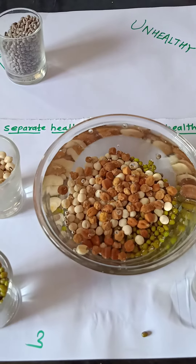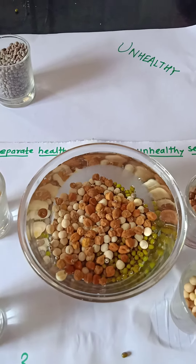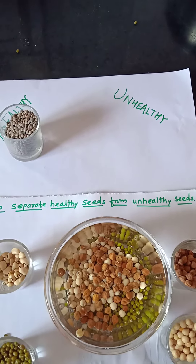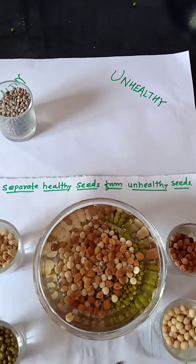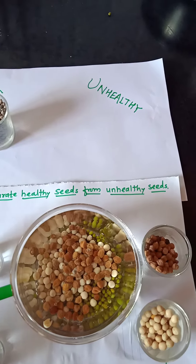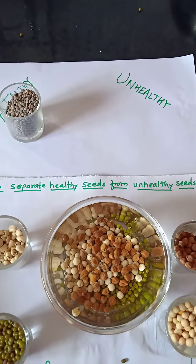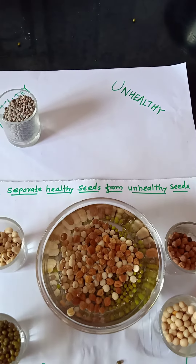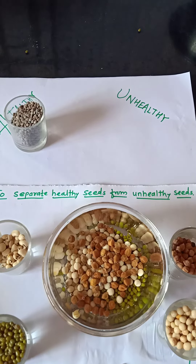All the seeds in the fifth batch are going down. From this experiment, what we can find out is that those seeds which are healthier settle down, and those which are unhealthy will float. With this we can find out which are good seeds for sowing. Thank you.